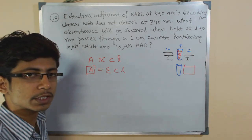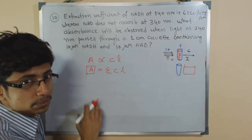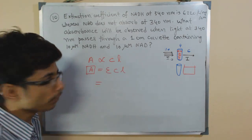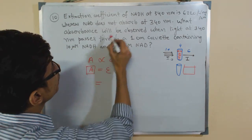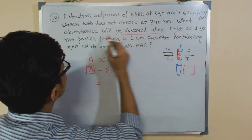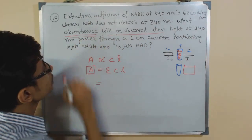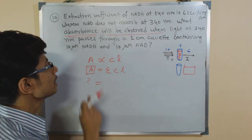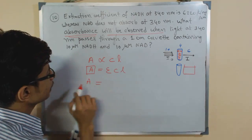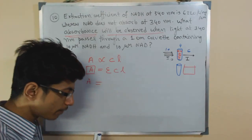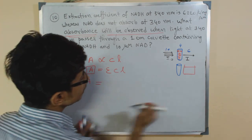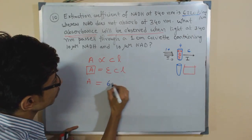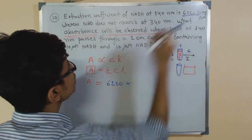The formula is: A (absorbance) = ε × c × l, where epsilon (ε) is the molar absorption coefficient, c is concentration, and l is path length. To find the absorbance, we need to put in all the values. The value of epsilon given here is 6220 mol⁻¹ cm⁻¹.